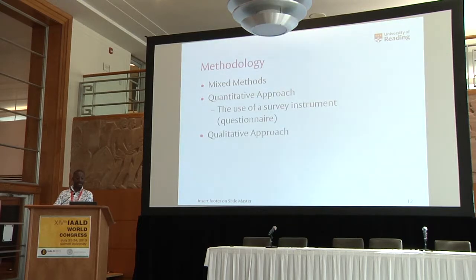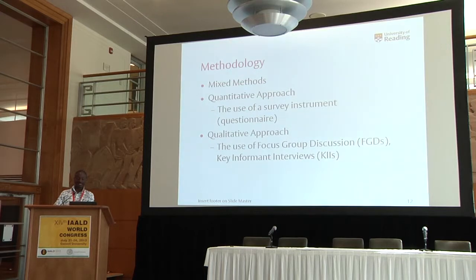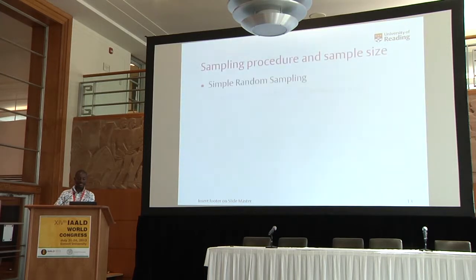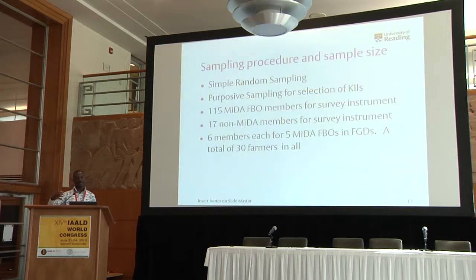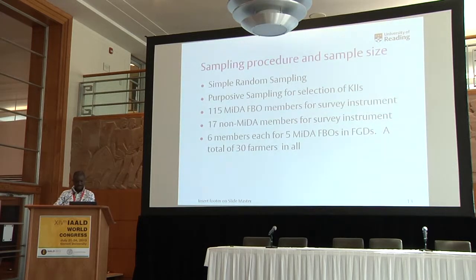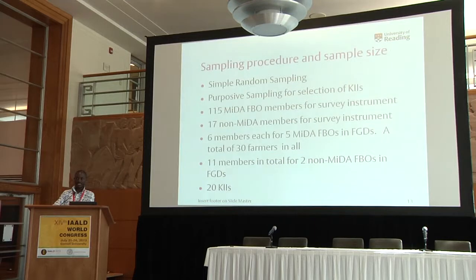Methodology: the study employed a mixed methods approach using survey instruments and qualitative instruments such as focus group discussions and key informant interviews. Sampling procedure: the study made use of simple random sampling at two stages — first at the farmer-based organization level and also in the selection of farmers. In total, there were 115 MIDA FBO members and 17 non-MIDA FBO members for the survey instrument. Five focus group discussions were conducted for the MIDA FBOs and two for the non-MIDA FBOs, and there were 20 key informant interviews in all.